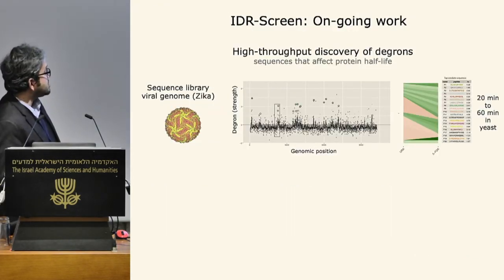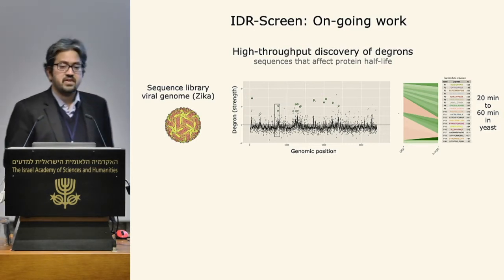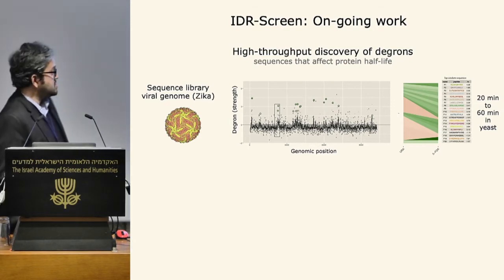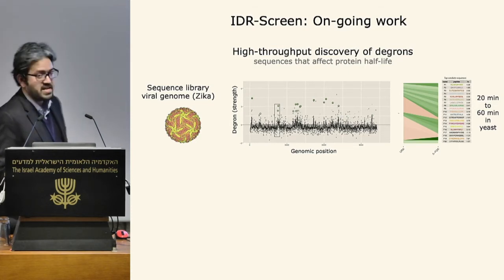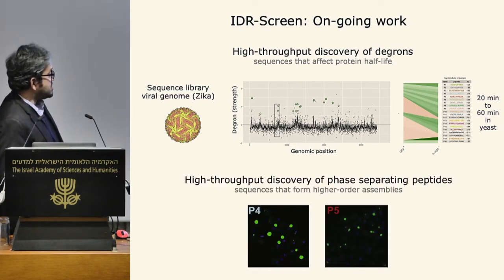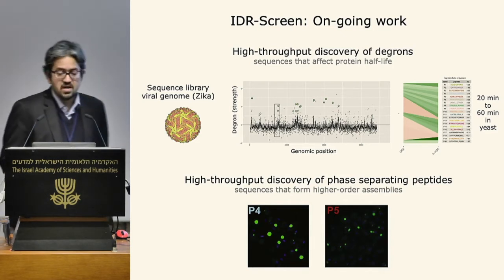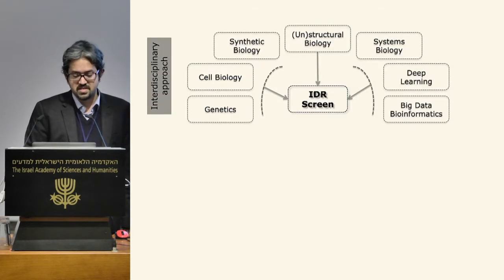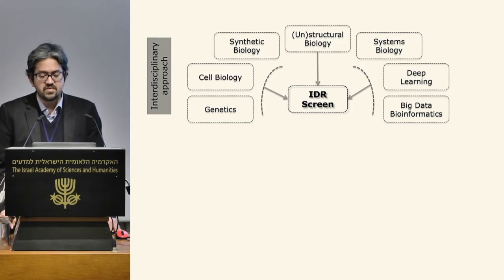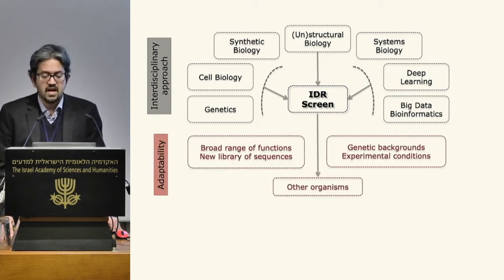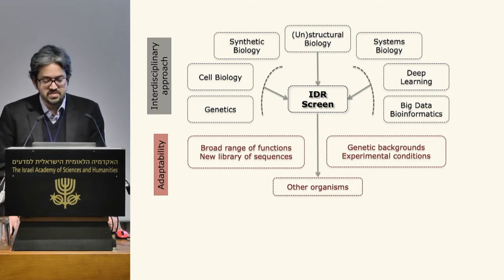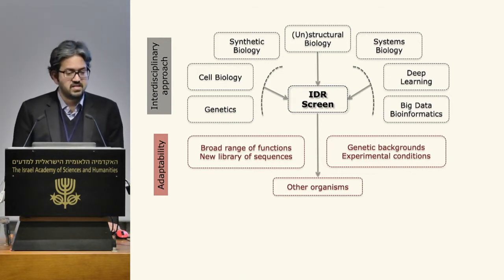In terms of ongoing work, we are discovering molecular mimicry events in viral genomes, including a screen of the Zika viral proteome that identified segments with protein half-life modulating activity. We are also identifying peptides associated with phase-separating droplets in cellular contexts. IDR screen integrates many different approaches, and because its steps are modular and scalable, it can be adapted to study a broad range of functions, test new sequence libraries, explore different genetic backgrounds, and extend to other organisms.